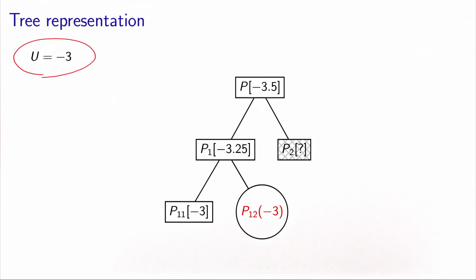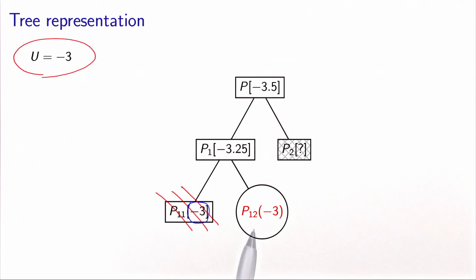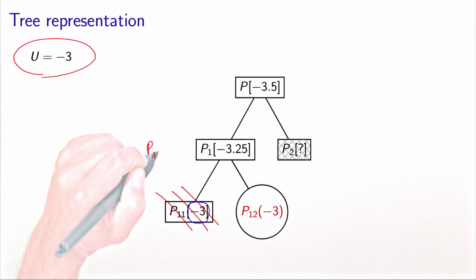Now we can exploit the bounds. P11 has a lower bound of minus 3, meaning the objective function at its optimal solution will be minus 3 or larger. Therefore, there is no feasible solution of P11 better than what we found in P12 — we don't need to consider P11 anymore. Since P1 was partitioned into P11 and P12, and P12 provides the best solution, we have effectively solved P1 with optimal value minus 3.